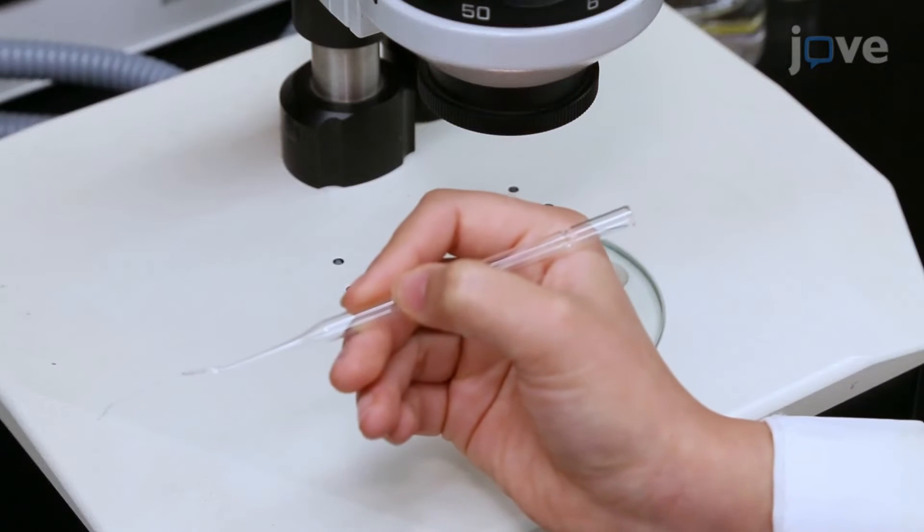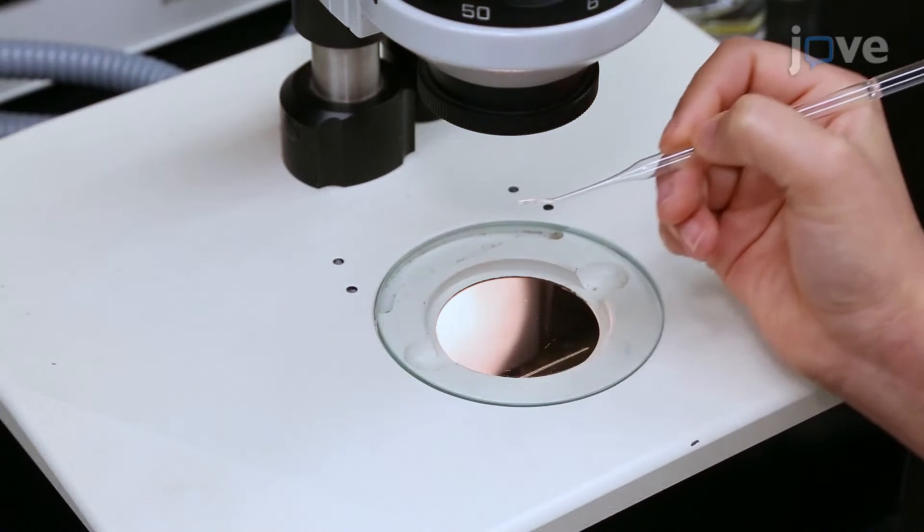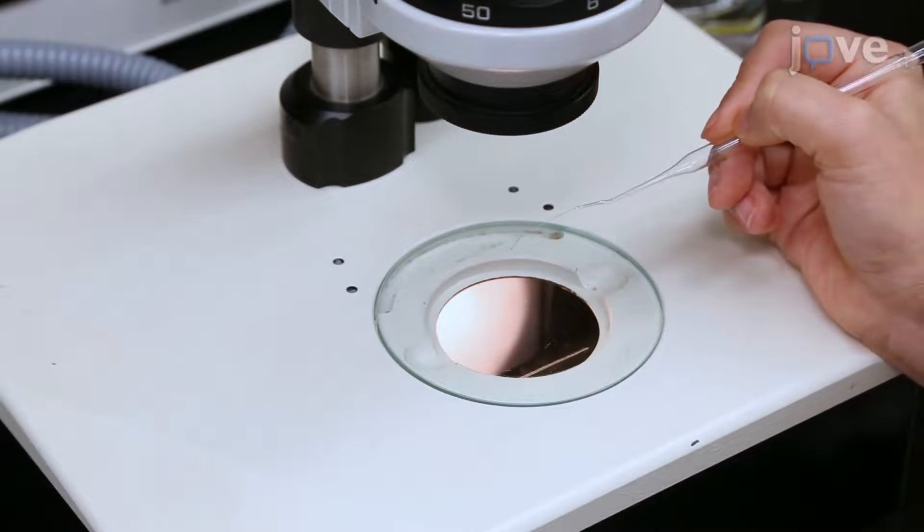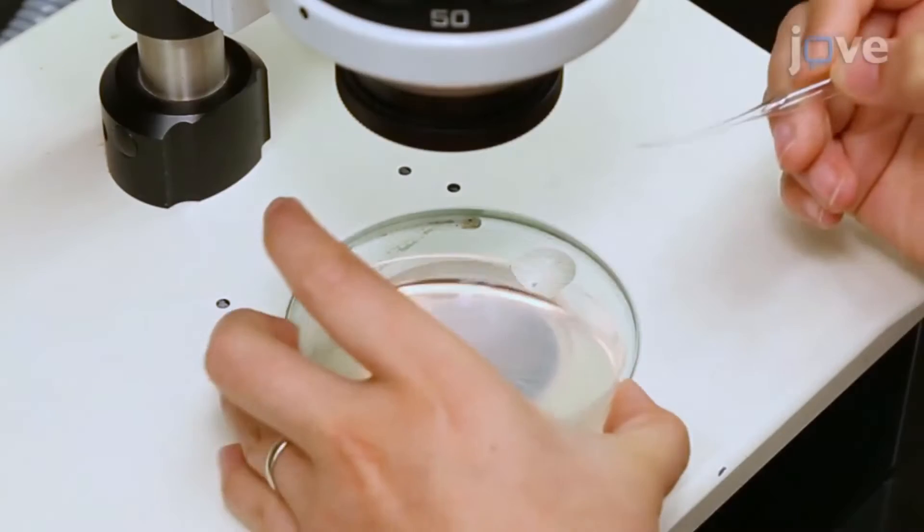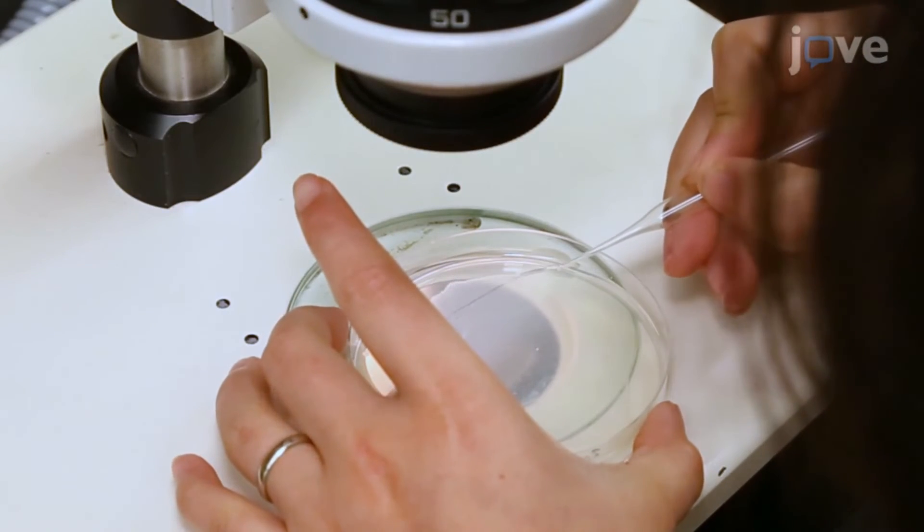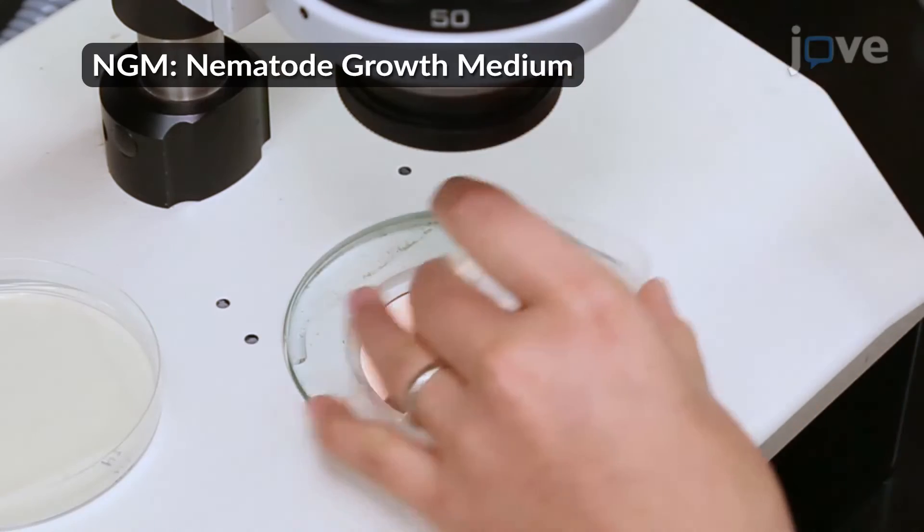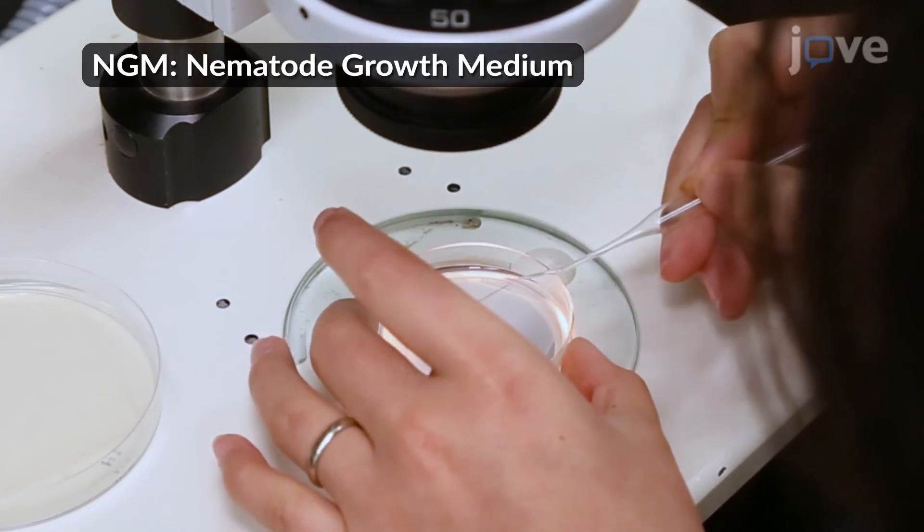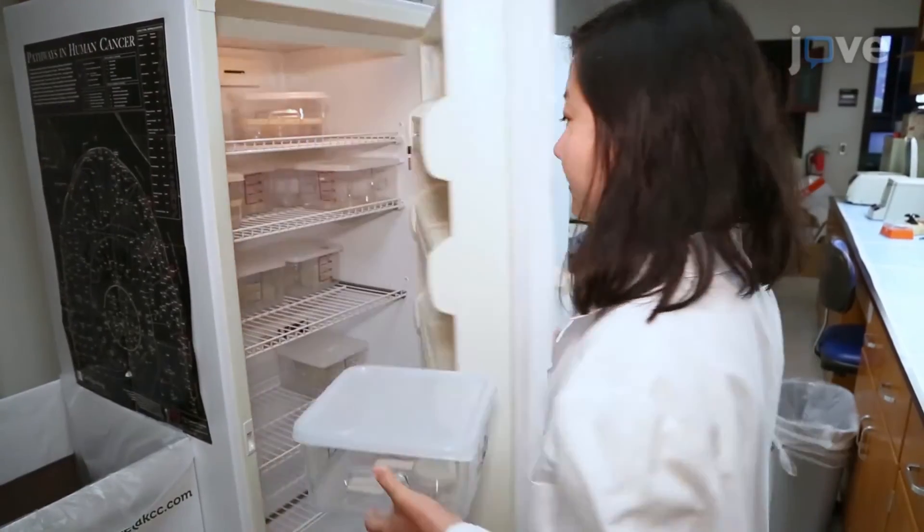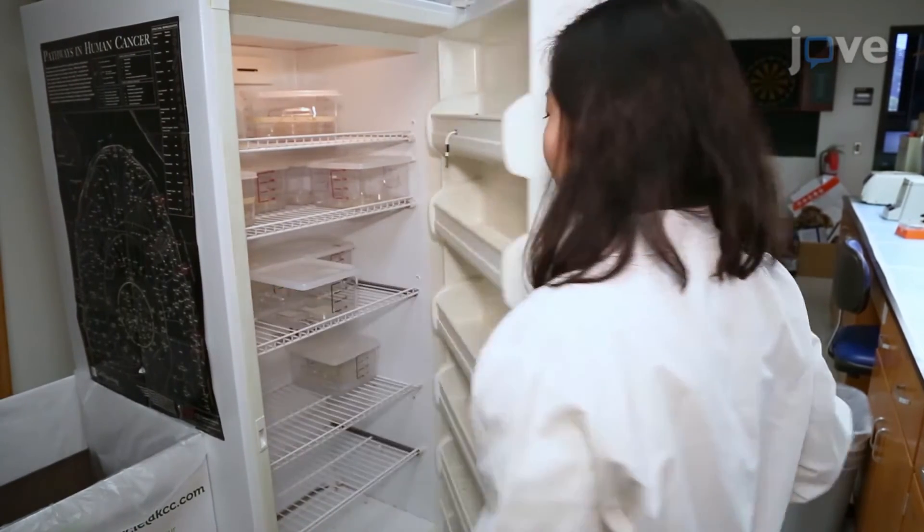To begin, use a worm pick made from a pasteur pipette and platinum wire flattened on one end to pick 20 to 30 L4 stage hermaphrodites and gently place them onto a 6 cm seeded NGM plate. Incubate the hermaphrodites at 20 degrees Celsius for 28 to 30 hours.